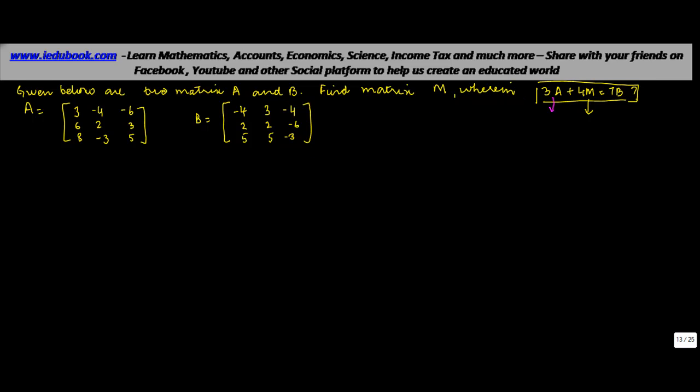Let's first see. Just like you solve your normal equations to find out the values of different variables, let's first find out the value of M. Now we know that 3A plus 4M is equal to 7B. Now in a normal equation what do you do? You try to eliminate all other elements from one side and put the variable which has to be found out, which is M in this case, on one side.